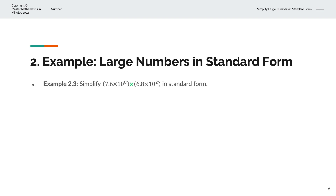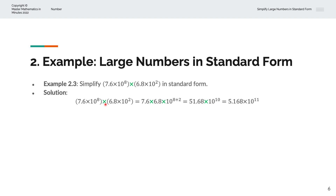In the third example, we're asked to simplify 7.6 times 10 to the power of 8 multiplied by 6.8 times 10 to the power of 2, and write the answer in standard form. We group 7.6 multiplied by 6.8, and group 10 to the power of 8 and 10 to the power of 2 together, giving 10 to the power of 8 plus 2. This equals 51.68 times 10 to the power of 10. Writing in standard form gives 5.168 times 10 to the power of 11. Here 5.168 is between 1 and 10, and 11 is a positive integer, so that is in standard form.